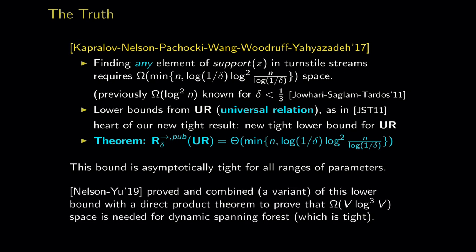The communication complexity model: there's a public random string, and two parties Alice and Bob. Alice gets input from X, Bob gets input from Y, they must compute f(x,y). In the one-way model, Alice sends one message (based on her input and the public random string) to Bob, who must output f(x,y) with probability 1-δ. R^{→,pub}_δ is the minimum message length for such a scheme. We show the optimal complexity of universal relation in this model matches the space bound.